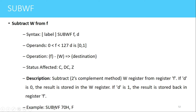An example of this instruction is SUBWF 0x70, F. The meaning is that the contents of the working register will be subtracted from the contents of file register 0x70 and the result will be stored in 0x70 because the destination is F. If instead we use D=0, the contents of the working register will be subtracted from contents of 0x70 and the result will be stored in the working register.